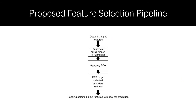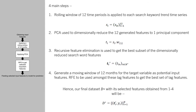Our proposed feature selection pipeline works as follows. We first create a rolling window of 12 time periods for each search keyword time series. Principal Component Analysis is then used to dimensionally reduce the 12 generated features into one principal component. After this, we use Recursive Feature Elimination to get the best subset of the dimensionally reduced search keyword features.